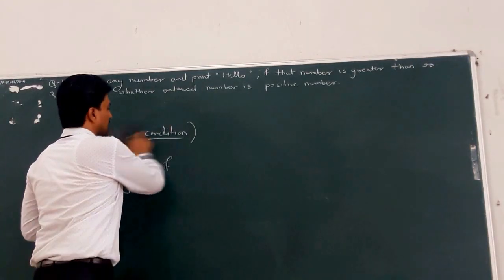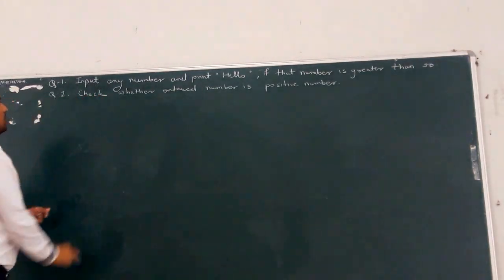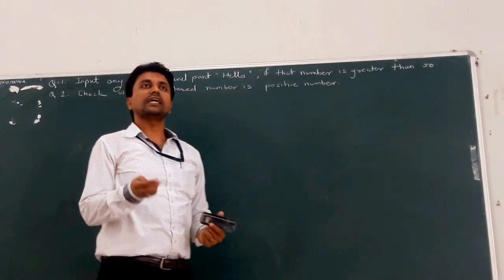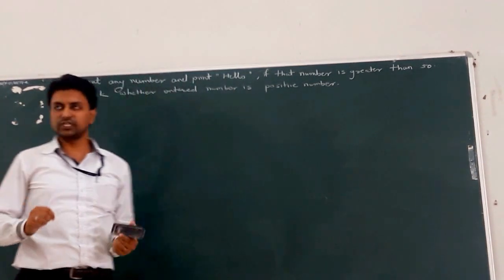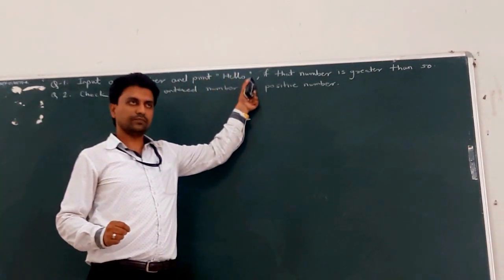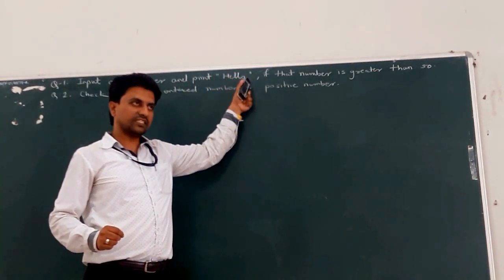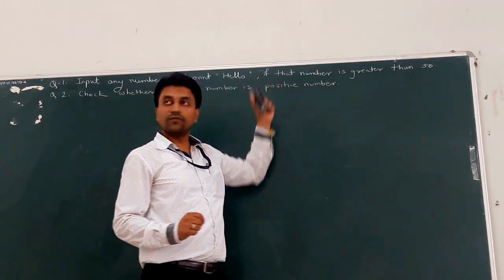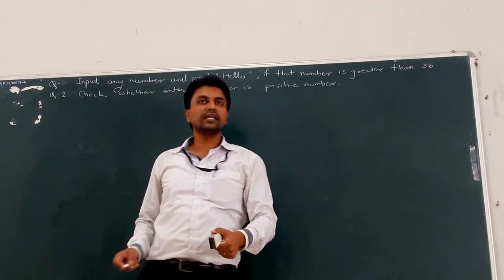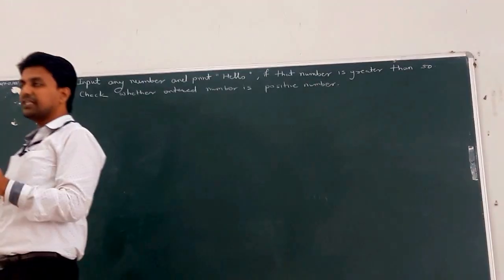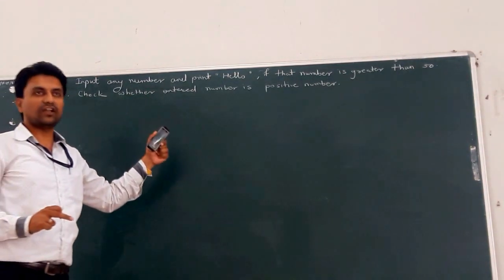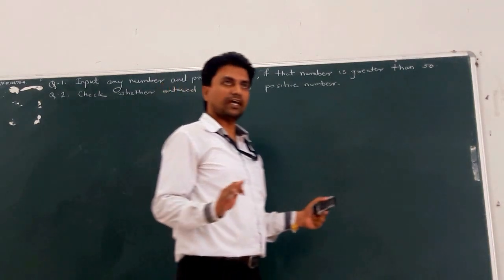Based on that, there are two problem statements on if. The first problem statement is: input any number from the user and print 'hello' only if the number is greater than 50. Then and then only print hello — otherwise don't print hello. So there is a condition on the print statement: the number must be greater than 50.